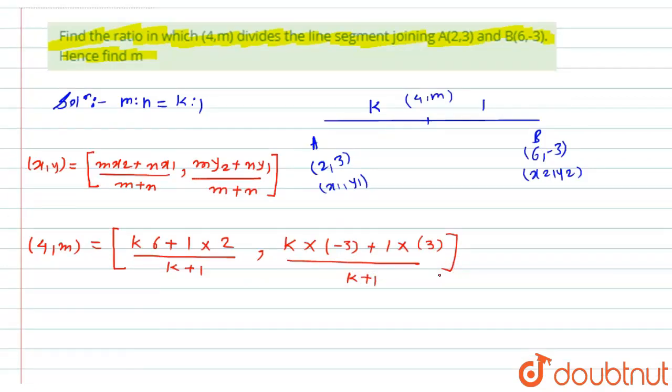Now, I will simply compare the coordinates of x and y. So, 4 will be equal to (6k + 2)/(k + 1), and similarly, m will be equal to (-3k + 3)/(k + 1).